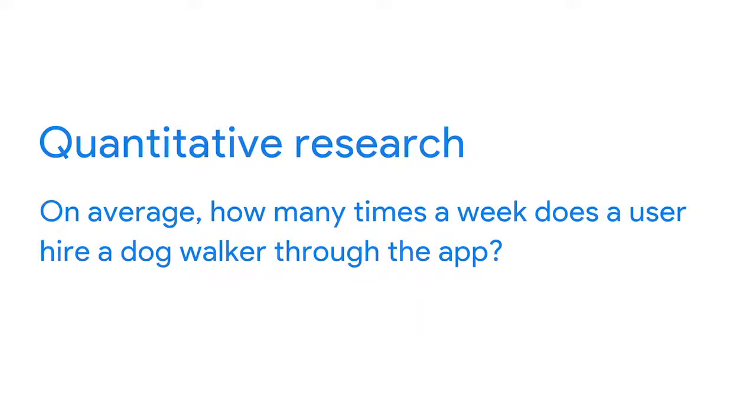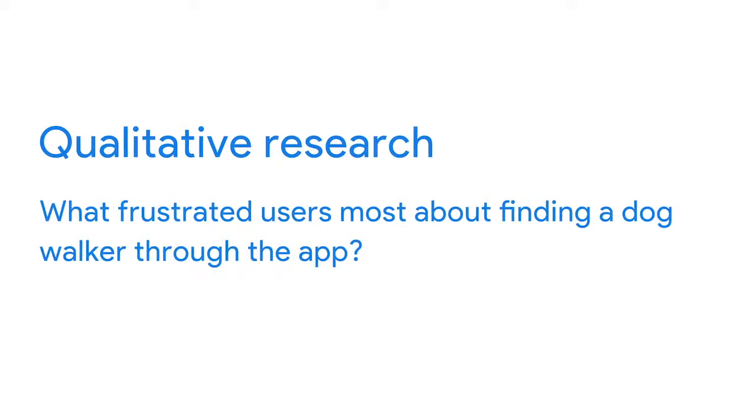Quantitative research focuses on data that can be gathered by counting or measuring — think numbers. Qualitative research focuses on observations about why and how things happen — think written descriptions. For our dog walking app, the question 'how many times a week does a user hire a dog walker?' will give you quantitative numerical data, while 'what frustrated users most about finding a dog walker?' will give you qualitative information. Both are important and focus on different parts of the user experience. Coming up, we'll describe how to measure the success of your journey with key performance indicators.